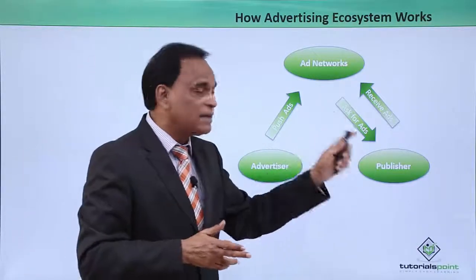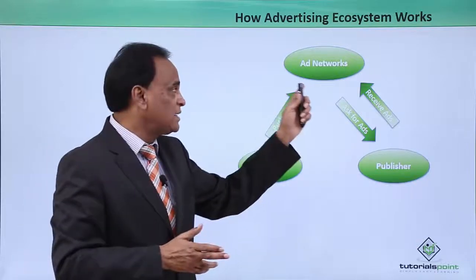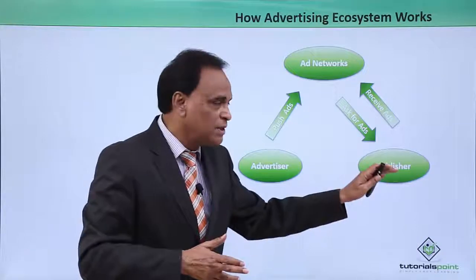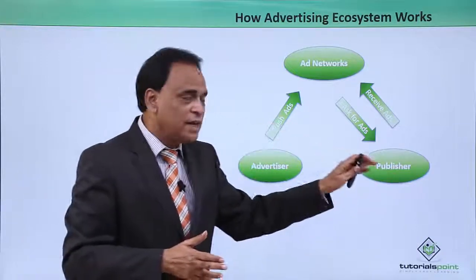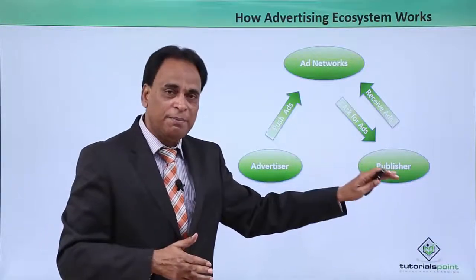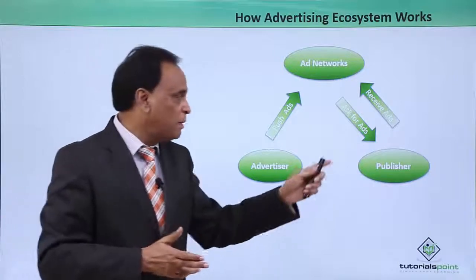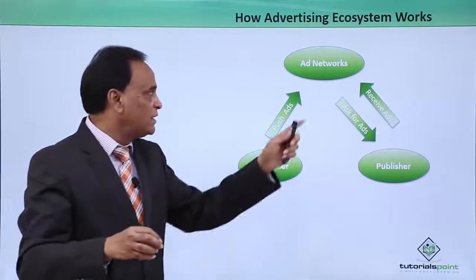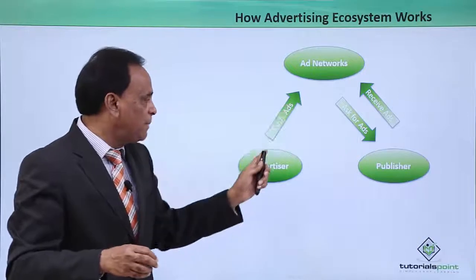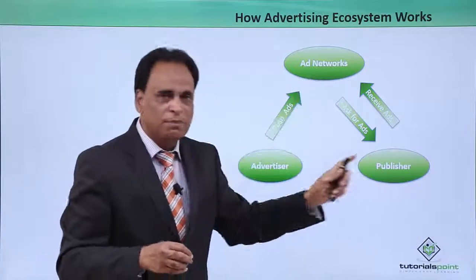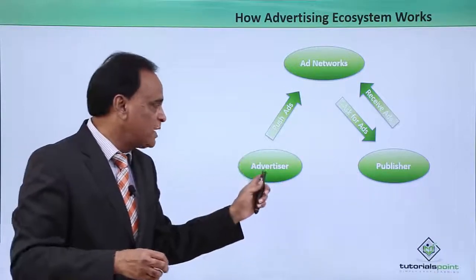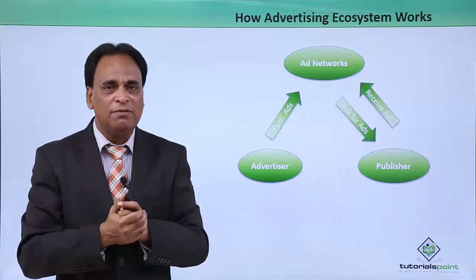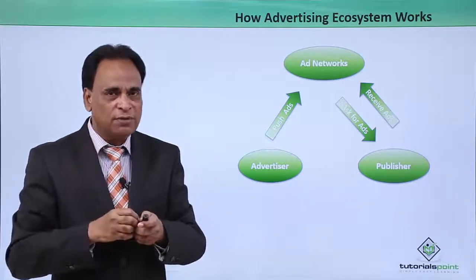If the ads are granted to the publisher by the ad network, the ad network gives the ads to the publisher and they publish them. Whatever clicks or impressions happen on the ads on the publisher's websites and mobile apps, the revenue is shared between the ad networks and the publisher — revenue that was originally paid by the advertiser. This is how the ecosystem of mobile advertising works.